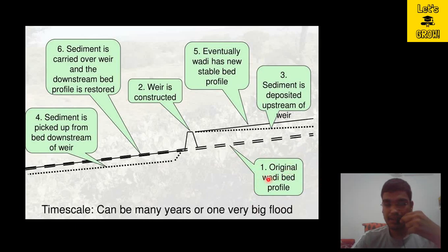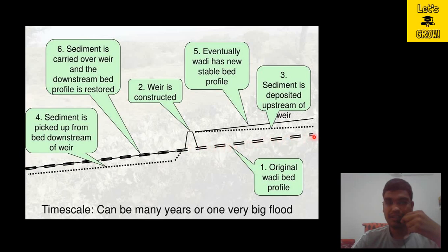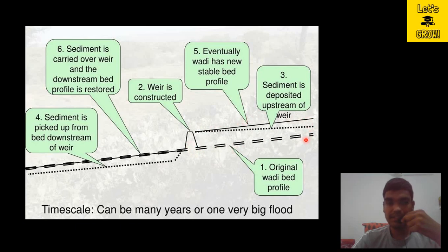The first profile shown is the original wadi bed profile — wadi meaning valley or channel — representing the original bed profile before construction of the weir. In the second step, a weir has been constructed. Due to the construction of this weir, water starts to store here, the depth increases, velocity decreases, and whatever sediment is coming from upstream is deposited behind this weir.